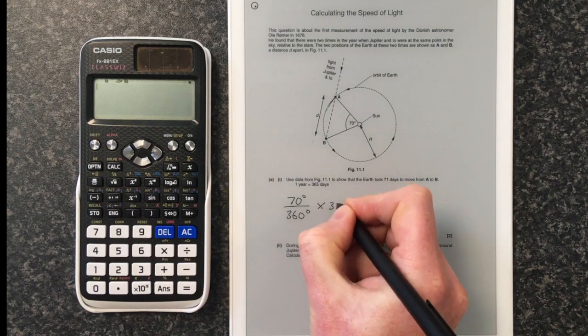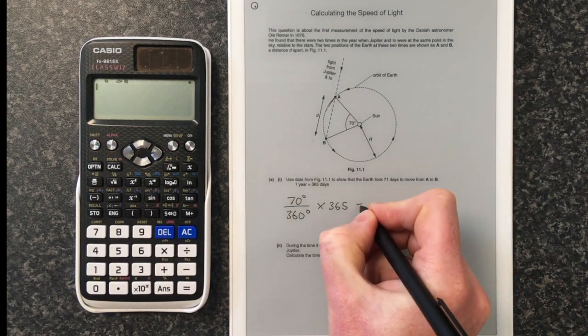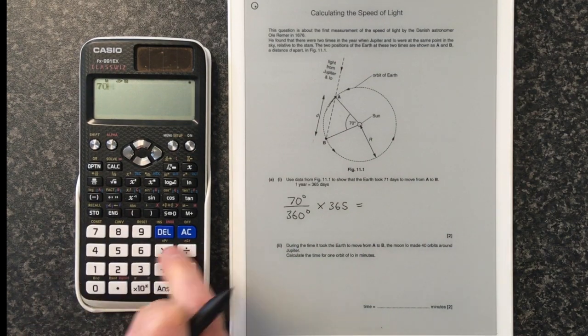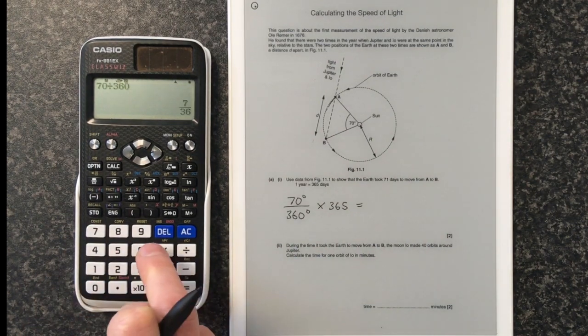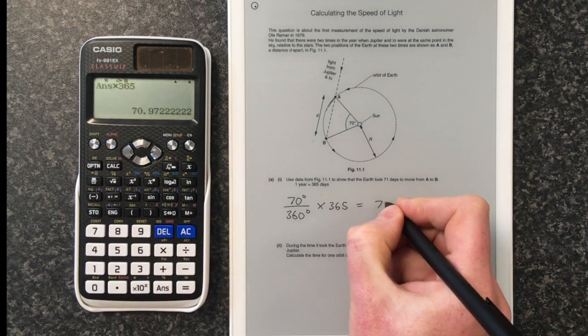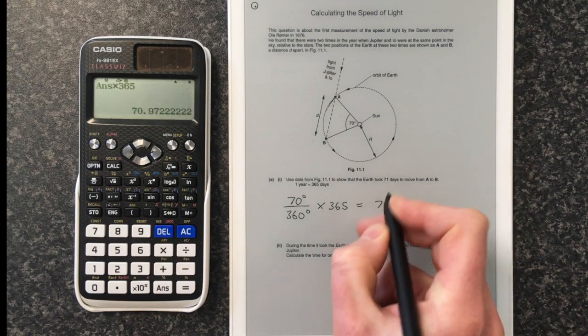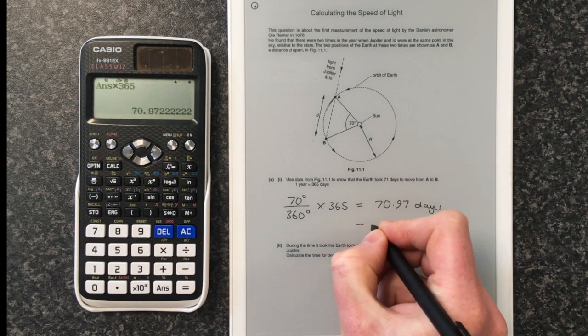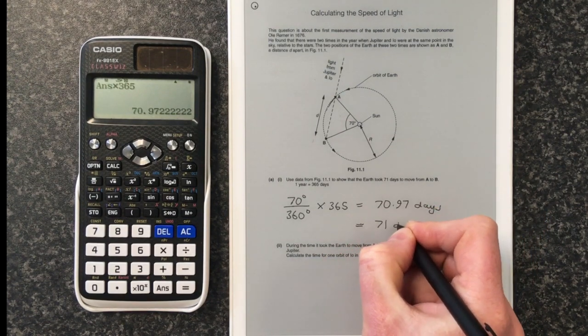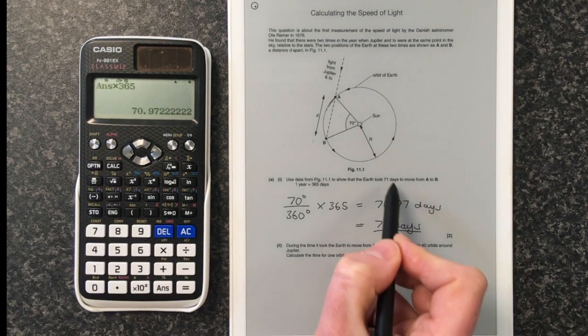If we then times that by 365 to find out how long it took, we'll get our answer. And our answer is 70.97 days. Round that up to our significant figures and it is 71 days, which is what we were trying to prove.